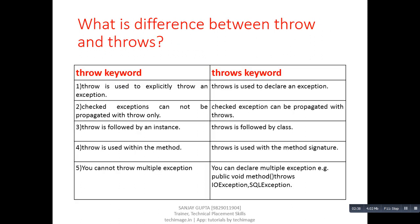Next question: what is the difference between throw and throws? First, throw is used to explicitly throw an exception whereas throws is used to declare an exception. Second, checked exceptions cannot be propagated with throw only, whereas checked exceptions can be propagated with throws. Third, throw is followed by an instance whereas throws is followed by a class. Fourth, throw is used within the method whereas throws is used with the method signature. Fifth, you cannot throw multiple exceptions whereas you can declare multiple exceptions — for example: public void method throws IOException, SQLException.